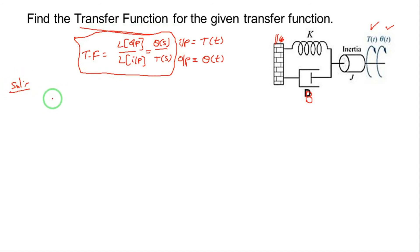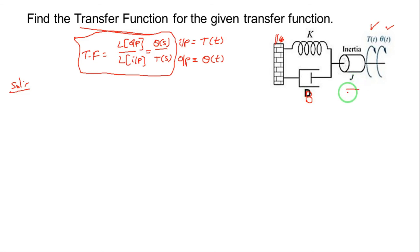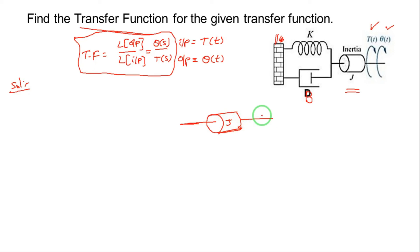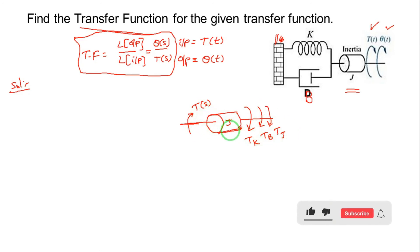First, identify the number of moment of inertia blocks — just as in translation systems we identify mass blocks, here we identify moment of inertia blocks. There is one moment of inertia block. Now identify the applied torques and opposing torques: applied torque T, opposing torques are TK due to spring, TB due to friction, and TJ due to moment of inertia.